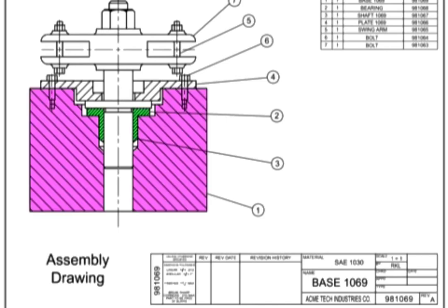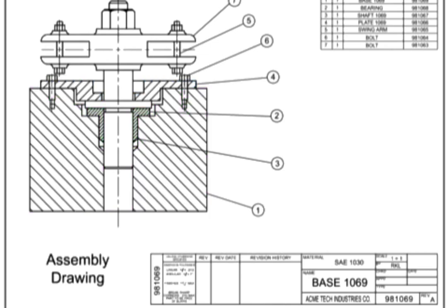Section lines are used to indicate the portions of the assembly that have been cut away. There are few, if any, hidden lines in an assembly drawing. Only the dimensions required to fully assemble the part or to be used as references are shown. In many cases, the order of assembly may be given in the notes.